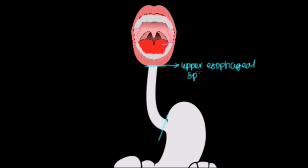A sphincter is just a circular localization of muscle — a bunch of muscle that sits in a ring — that makes sure it's closed unless we tell that muscle to relax so we can pass food along. When I say we're going to tell the muscle to relax, that implies this muscle is under our control. So it's composed primarily of skeletal muscle, meaning it's under voluntary control.